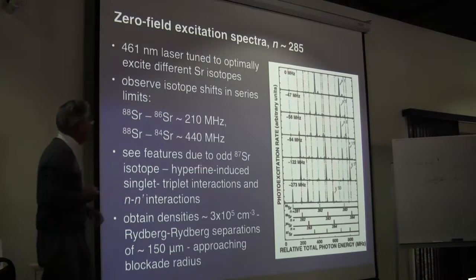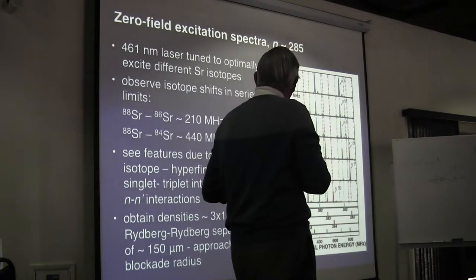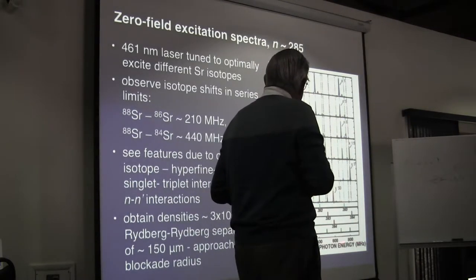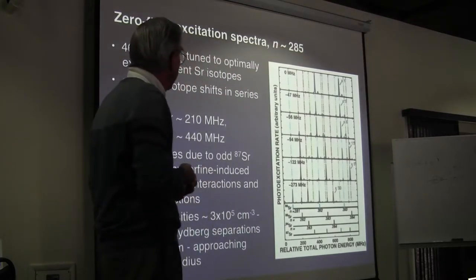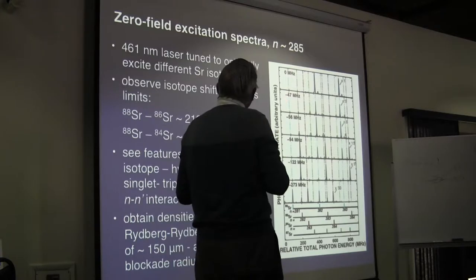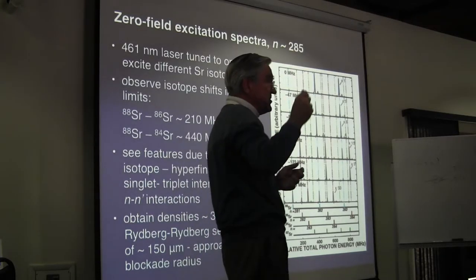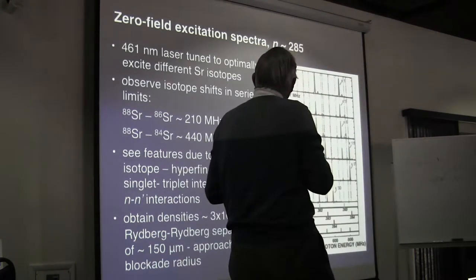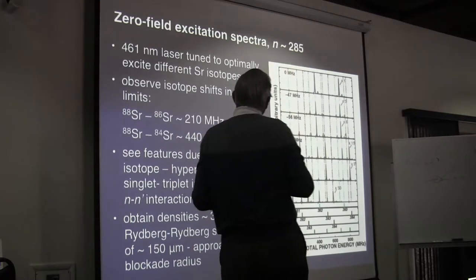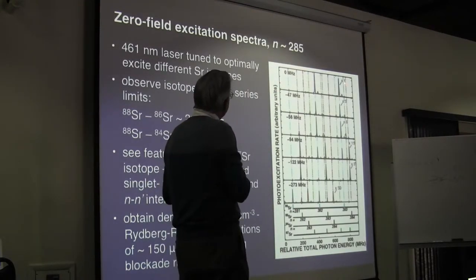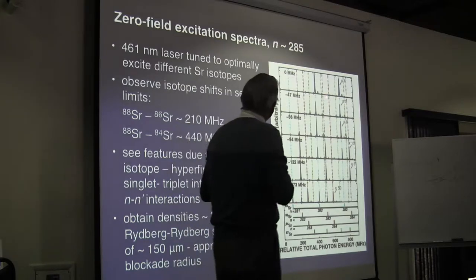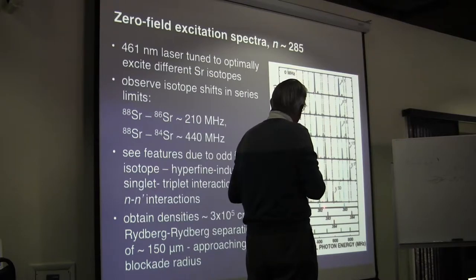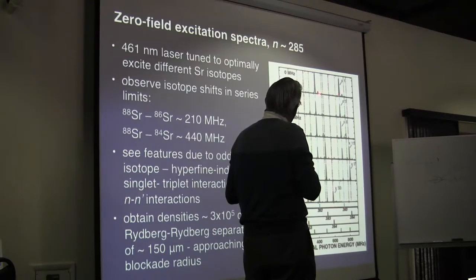Because we have good laser powers, we can get large excitation rates. Here is a photo-excitation spectrum as a function of relative total photon energy — the sum of the two photon energies — tuning in the vicinity of about n equals 280. The numbers denote the tuning of the 461 nanometer laser going to the intermediate P state. This set of data was recorded with that laser optimally tuned to excite transitions in the majority 88 strontium isotope, and you see a series of sharp lines corresponding to n equals 282, 283, and so on.